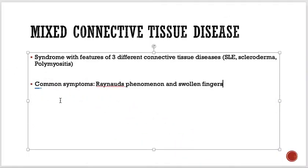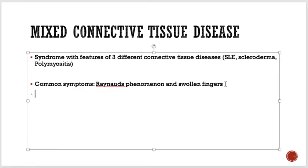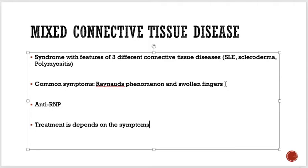One MCQ point: the antibody checked for MCTD is anti-RNP antibody. Since this is a feature of three different connective tissue diseases, treatment is basically dependent on the patient's symptoms.